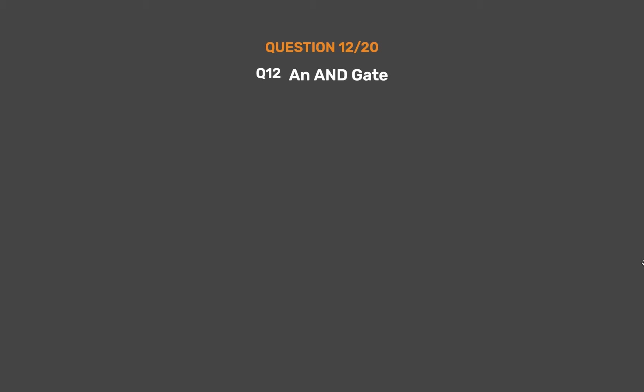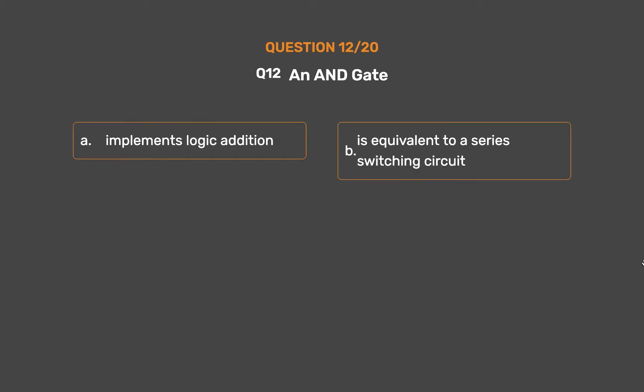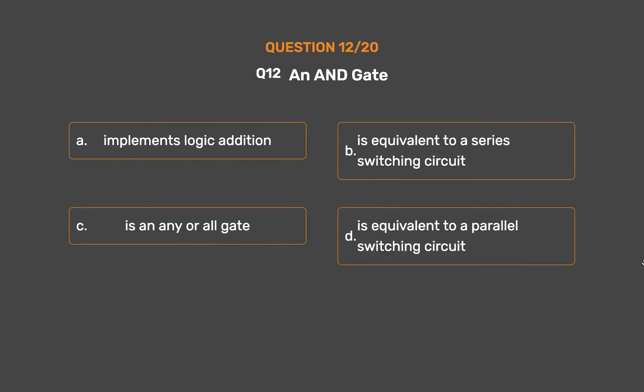Question number 12. An AND gate: Option A: Implements logic addition. Option B: Is equivalent to a series switching circuit. Option C: Is an any-or-all gate. Option D: Is equivalent to a parallel switching circuit.